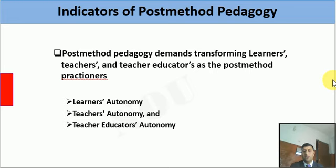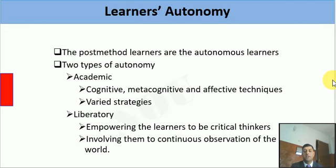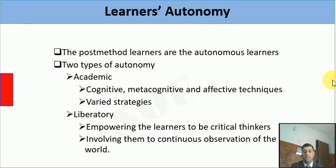Kumaravadivelu also discusses the indicators of post-method pedagogy: learner autonomy, teacher autonomy, and teacher educator autonomy. Learner autonomy is of two types — academic and liberatory. Academic autonomy means the learner is free to choose cognitive, metacognitive, and affective techniques with a variety of learning strategies and styles. Liberatory autonomy is about empowering learners to be critical thinkers, making students able to ask questions in the classroom.